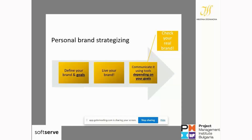So: we define our brand, define our goals, live our brand, and communicate it through the channels and tools that will help us reach our target audience. On the journey, we check from time to time whether the personal brand people are consuming is the one we really want to communicate. We need to communicate our brand using the tools that will help us achieve our respective professional goals.